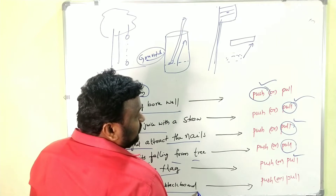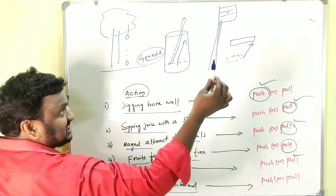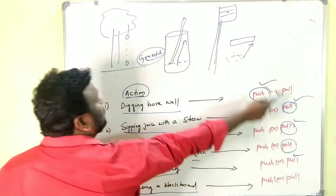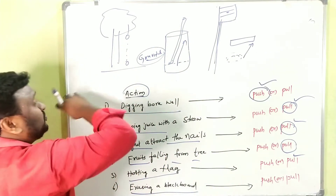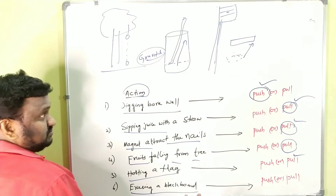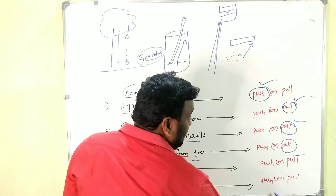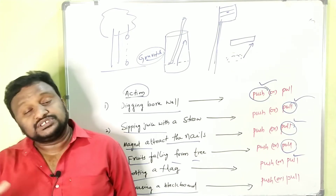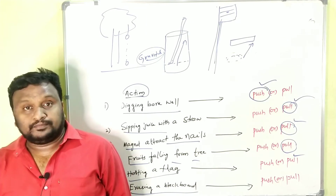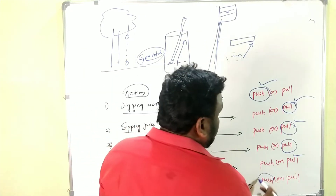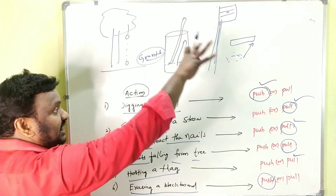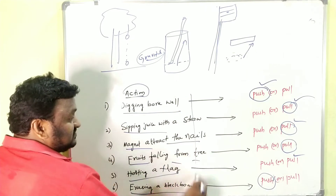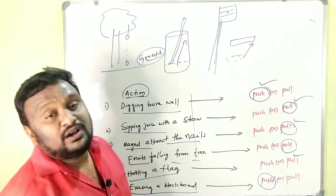Erasing a blackboard: the marker moves in one direction — that is push. If you move it the other way — that is pull. So erasing a blackboard can be both push and pull depending on direction. In an exam question they may give options like push, pull, or push and pull. If both directions are involved, select push and pull; if only one direction, compare to push or pull accordingly. Every activity is one potential exam question on the definition of force.